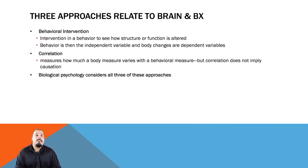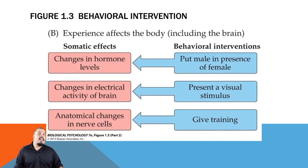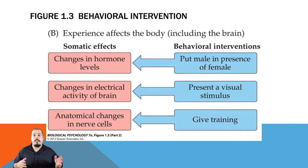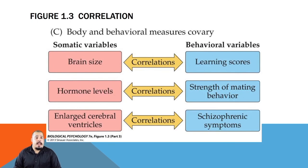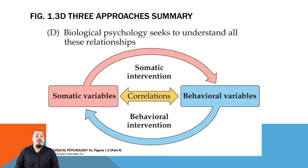Sometimes it is impossible to manipulate variables due to ethical boundaries. Advanced areas of research employ all three approaches. Behavioral interventions are the opposite of somatic interventions — the behavior is being controlled by researchers and they look at how behavioral changes affect the brain and body. Correlations examine how one variable is related to another with no manipulation; you cannot infer causation using correlational research because no change is occurring. In behavioral neuroscience, we utilize all three types of approaches to find out more about the nervous system and how it affects behavior, emphasizing that relations between brain and behavior are reciprocal — each affects the other in an ongoing cycle.